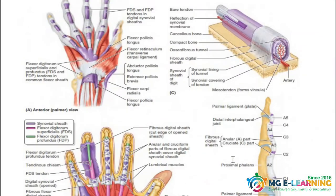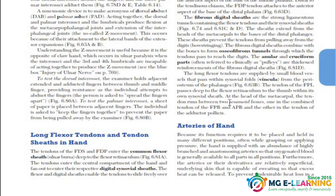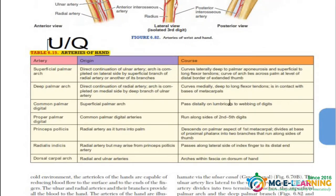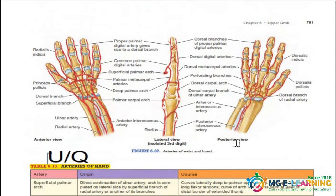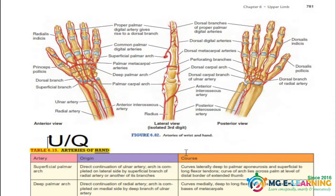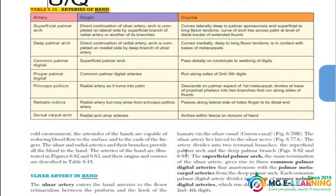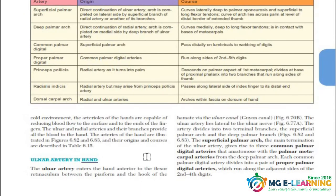Arteries of the hand are very very important for scenario-based questions. Arteries should be covered from the tables, but you also have to study them from the BD textbook. You should especially know the superficial and deep palmar arches — these are very famous UQs and are elaborated more easily in BD, so consult them from there.